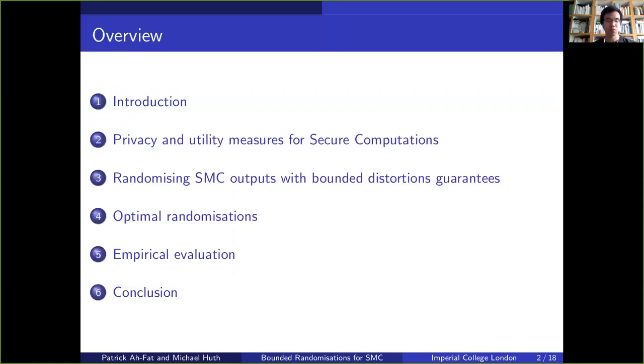In order to do so, I will first introduce the topic of secure multi-party computation. Then I will talk about privacy and utility constants in SMC. This will enable me to motivate our main objective, which is to randomize SMC outputs with bounded distortion guarantees.